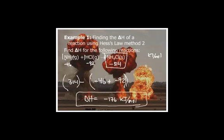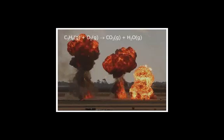This next reaction is purposely left unbalanced, so we're going to have to balance it. I have three carbons, so I'm going to put a three there. I've got eight hydrogens, so I'm going to put a four for the water. And then for oxygens — three times two is six, plus four — that's ten, so I need five oxygens. So the balanced equation has a coefficient of five for O₂.